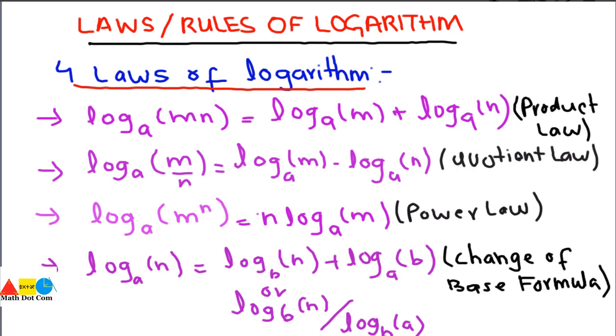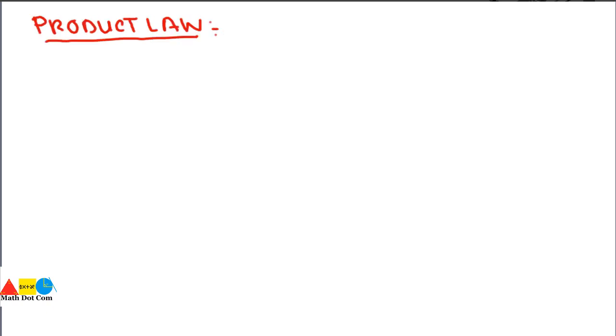We will find the proof of each law one by one so that we can have a clear understanding of how the left hand side is equal to the right hand side. First, we will find the proof of the first law: the product law. We first write its mathematical statement, then we will prove it.